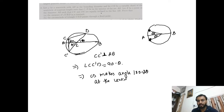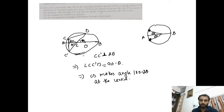Is this clear? The center also lies on AB because AB is the diameter. So we can say there is a center, let's call it O. So the angle COD at center O is 180 minus 2 theta.